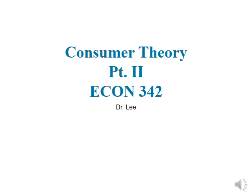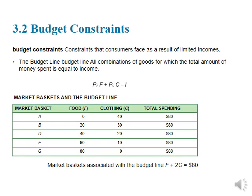Welcome back everyone. Today we continue our lecture on consumer theory, and you'll recall that there were three elements we were interested in: preferences, budgets, and choice. Now that we've explored what makes up individual preferences, we can start to talk about the other element that will eventually lead to a consumer choice — how much money we have.